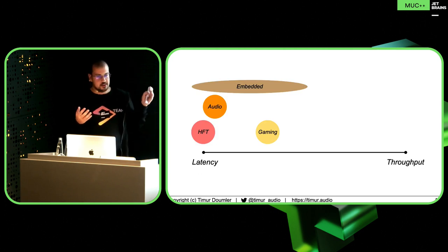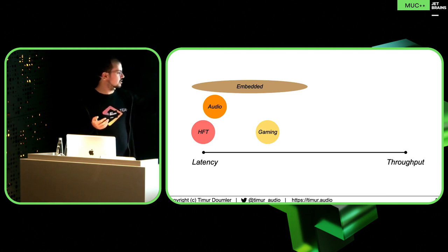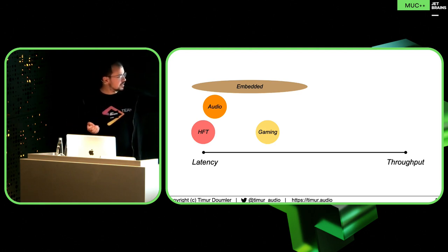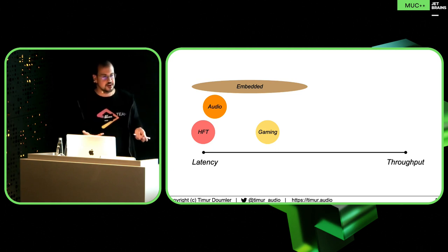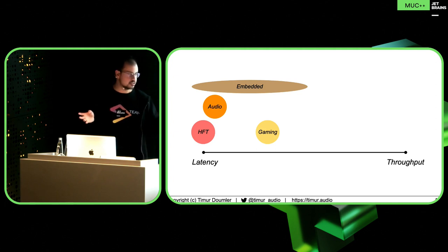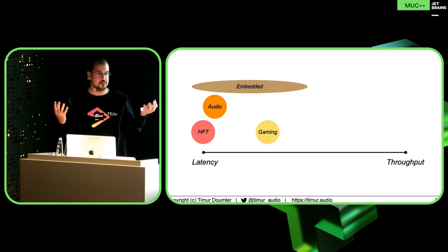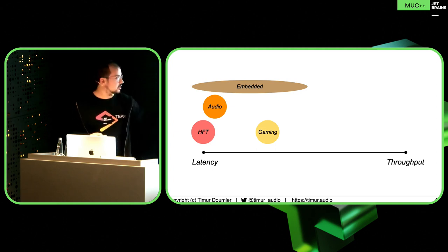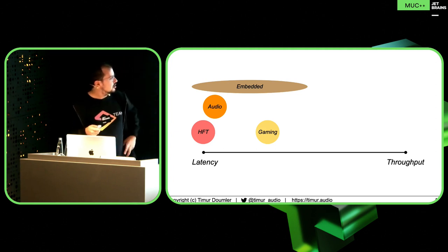We can categorize those domains on the spectrum. If you have high frequency trading, they're all the way at the very extreme end of latency — a hyperfocus on the lowest latency possible. Audio processing is kind of similar. In gaming, you do care about throughput quite a lot as well because you want to render as much stuff as possible, but you also don't want to drop frames. You'd rather render less stuff but not drop frames so that the user has a smooth experience. Embedded I just drew as a big blob because there's just so many different applications.